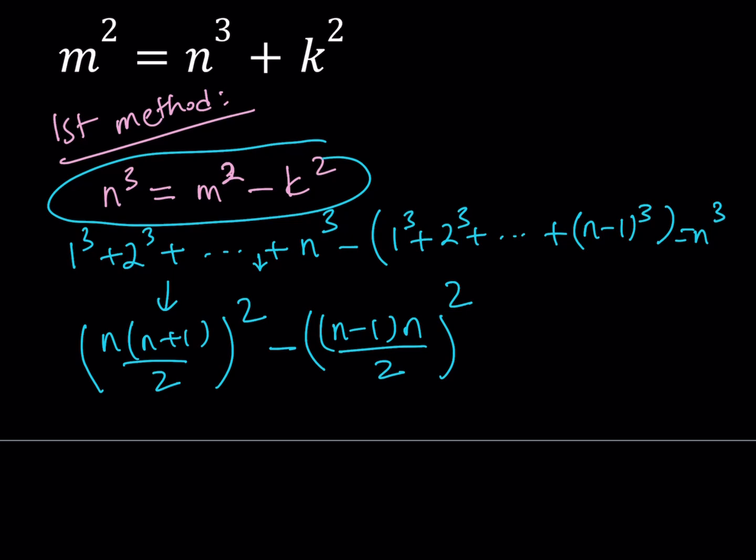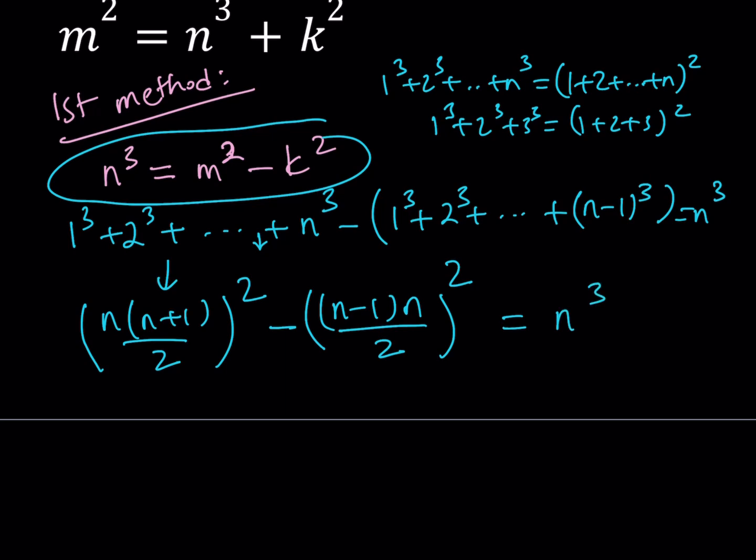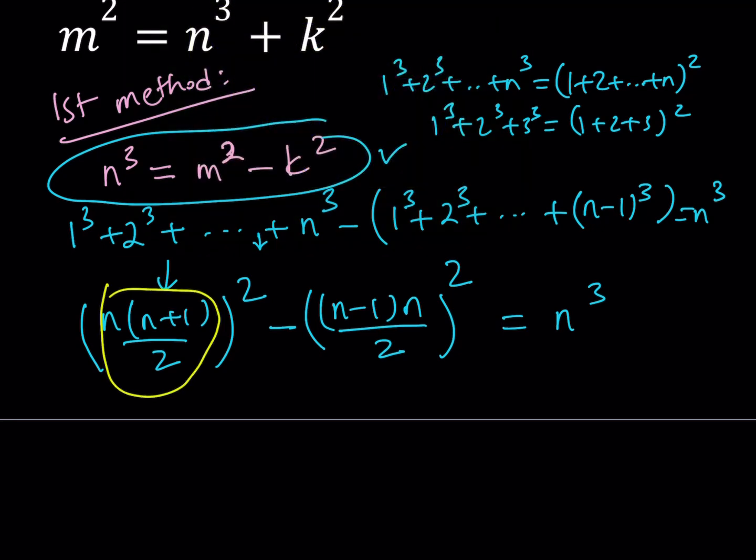If you remember the formula for the sum of consecutive integer cubes, then you'll have the following. The first one is going to be n times n plus 1 divided by 2 quantity squared. And the next one is n minus 1 times n divided by 2 quantity squared. Now, if you remember, we have this famous identity, which is actually really cool, that if you have the sum of cubes, you can basically sum the consecutive integers and then just square that sum. For example, 1 cubed plus 2 cubed plus 3 cubed is the same as 1 plus 2 plus 3 to the second power. Both of them are going to equal 36. So what happens is this is equal to n cubed. And now we were able to write n cubed as a difference of two squares, which is really cool.